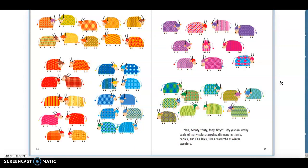Ten, twenty, thirty, forty, fifty. Fifty, fifty yaks in wooly coats of many colors, argyles, diamond patterns, cables, and fair aisles, like a wardrobe of winter sweaters.